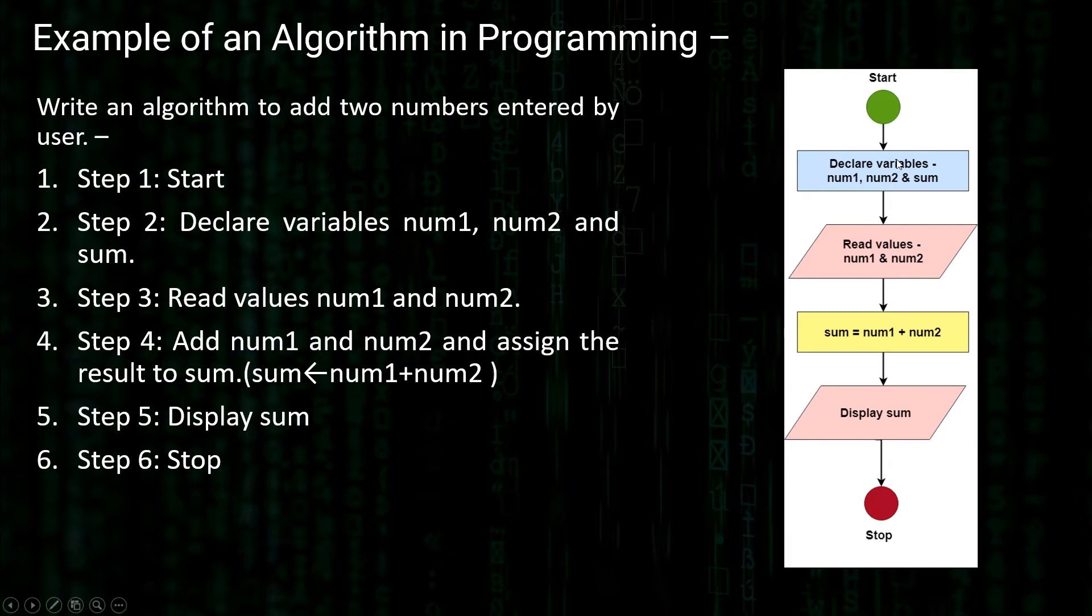You can also convert this into a flowchart scenario. You can see over here a flowchart is visually more understandable at times. The start and stop is denoted by circles green and red. The rectangle ones are where you actually do some processing. The parallelograms are where you do input and output. Here we are declaring the variables, taking input for num1 and num2, calculating the sum, displaying the output and then our algorithm is finished. This is a very basic example of an algorithm.